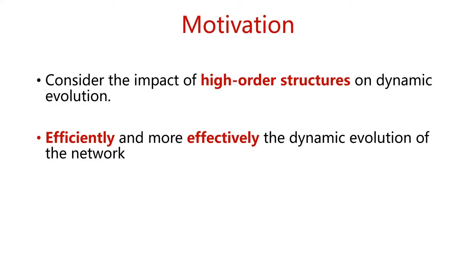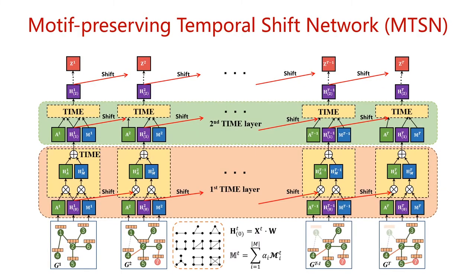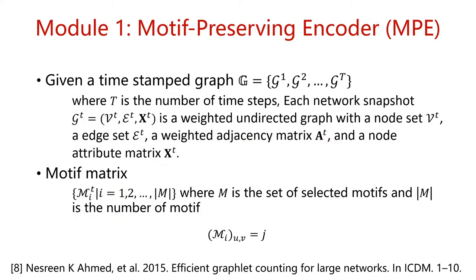Our goal is to provide a method that can consider the impact of high-order structure on dynamic evolution, and at the same time, efficiently and more effectively model the dynamic evolution of the network. We proposed the Motif-Preserving Temporal-Shift Network. We first solve the problem of how to use the high-order structure of the dynamic network.